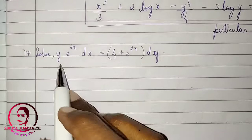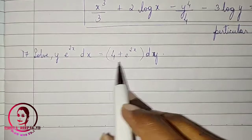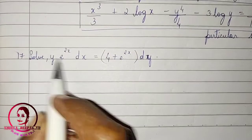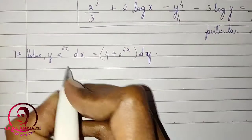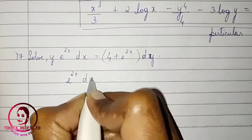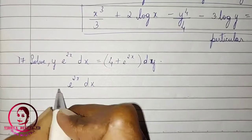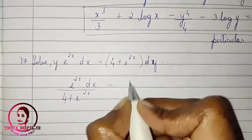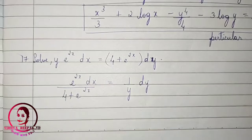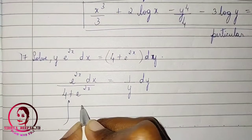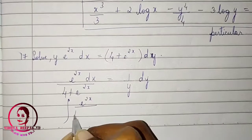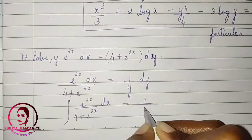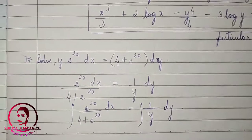Next question: solve y·e^(2x)·dx = (4 + e^(2x))·dy. We can easily separate variables: e^(2x)/(4 + e^(2x))·dx = (1/y)·dy. Integrating both sides: integral of e^(2x)/(4 + e^(2x))·dx = integral of (1/y)·dy.